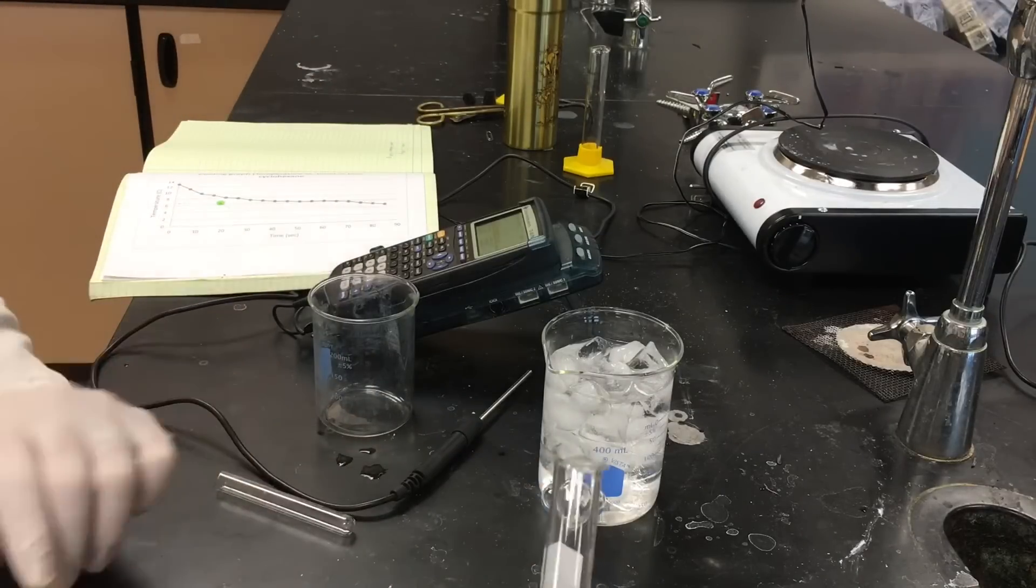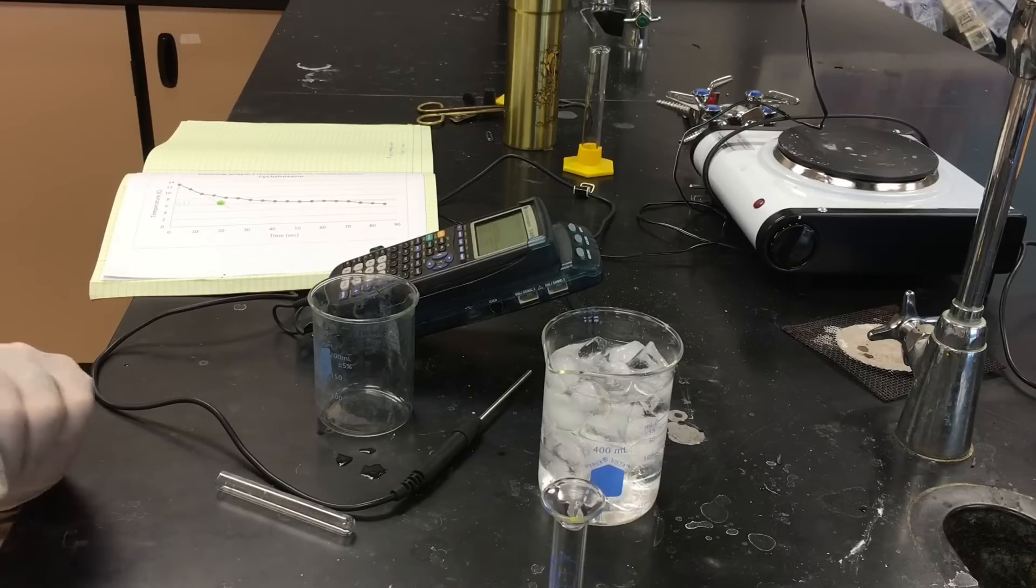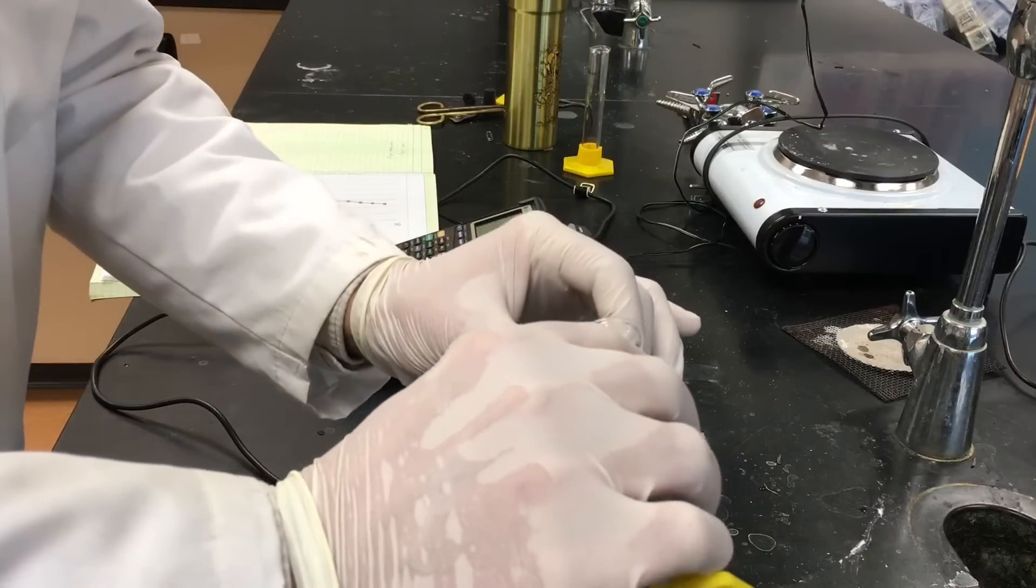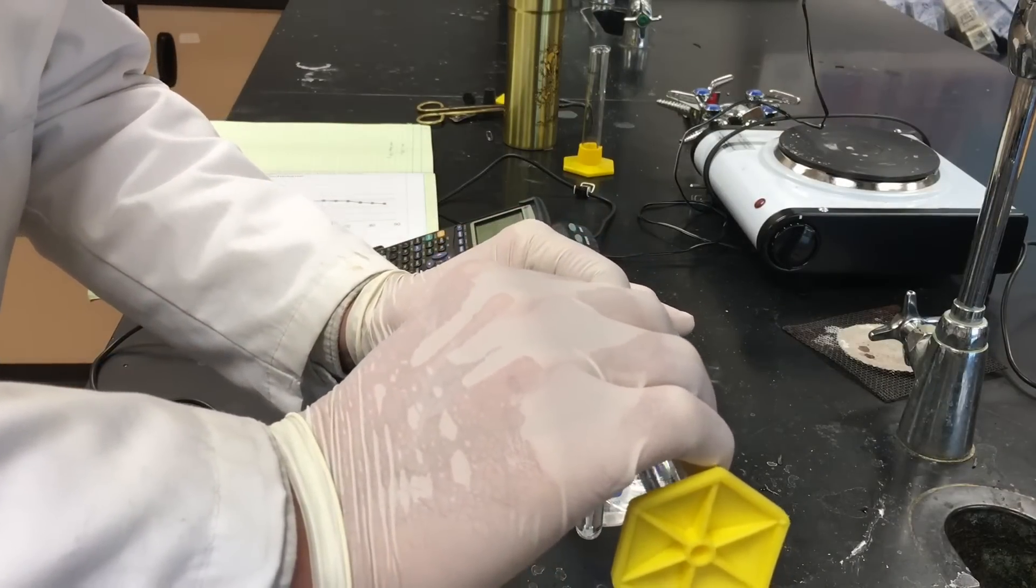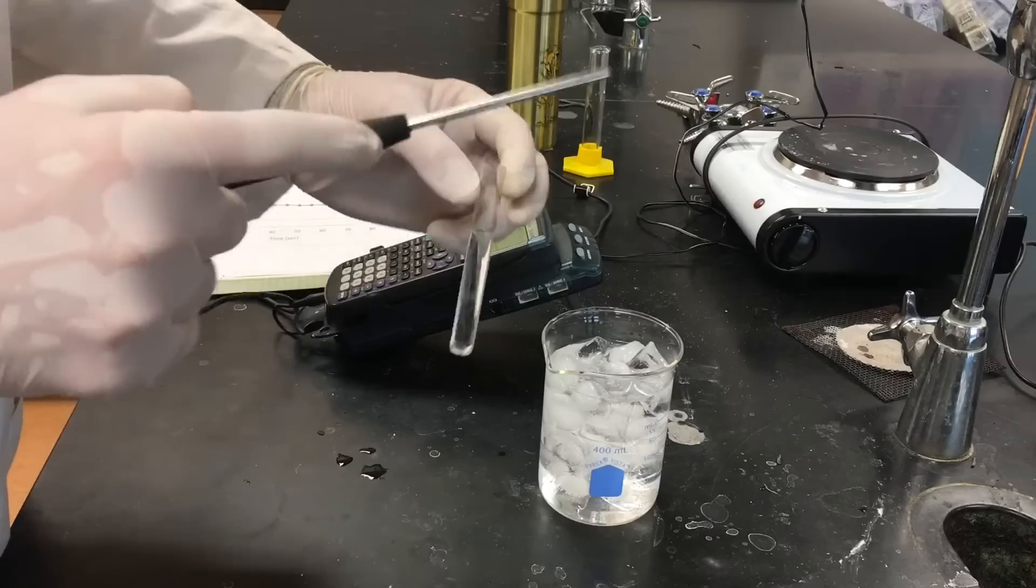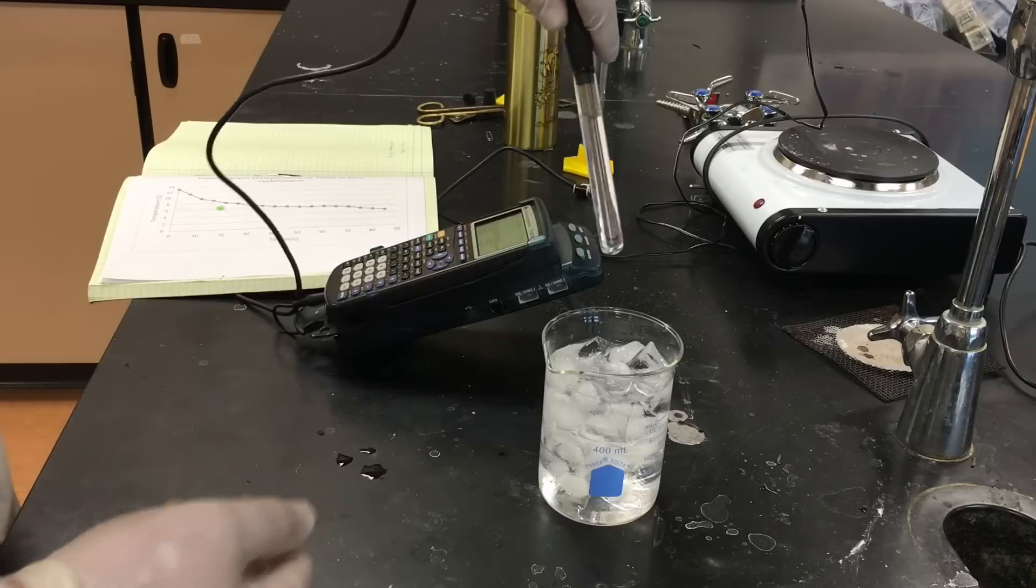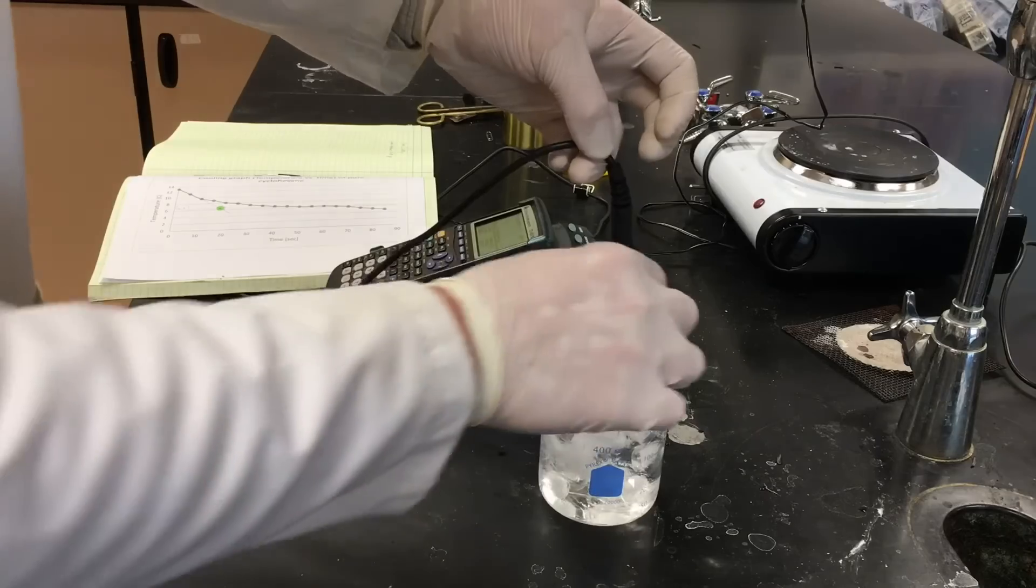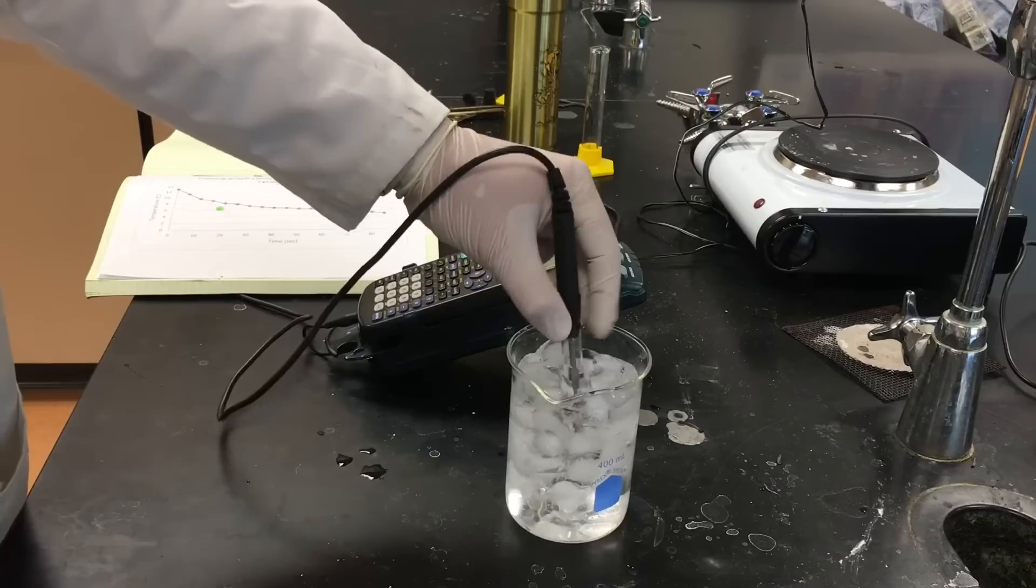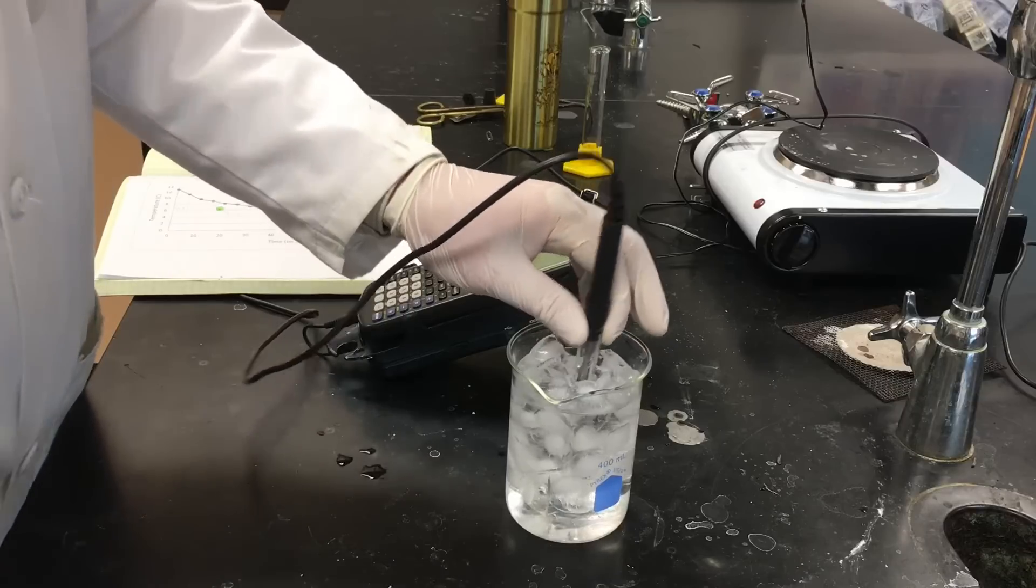We're gonna pour 5 milliliters again into a small mixing test tube. We're going to repeat the freezing of the solution exactly like we did when it was pure cyclohexane. We're gonna cool it to about 13 degrees and then take the temperature readings every 5 seconds.